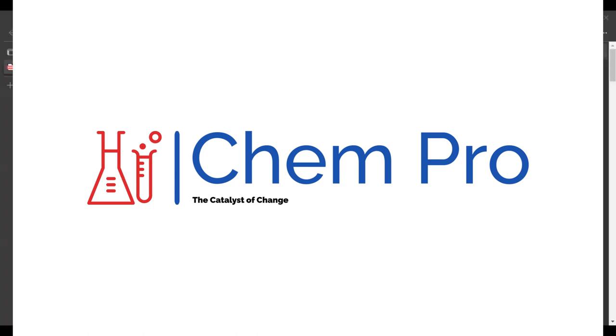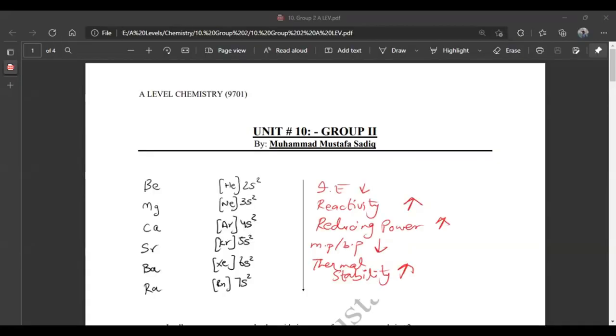So now you are seeing Group 2 elements: Beryllium, Magnesium, Calcium, Strontium, Barium, and Radium.